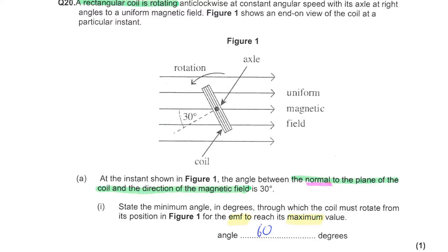This is the Magnetic Fields Homework Booklet Question 20. A rectangular coil is rotating anticlockwise at constant angular speed, with the axle at right angles to a uniform magnetic field. The diagram shows an end-on view. Here we have the magnetic field from left to right, the axle going into the page, and you can see the orientation of the coil.